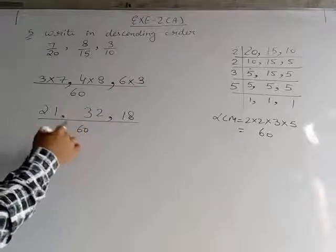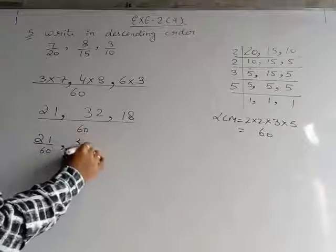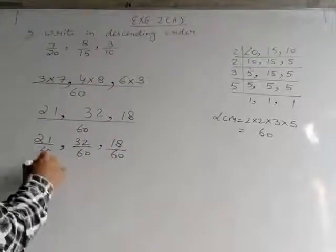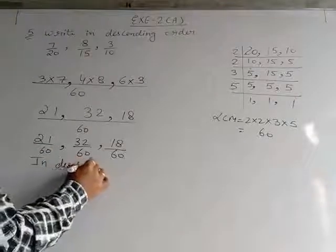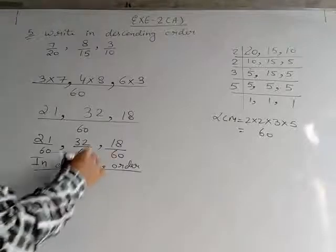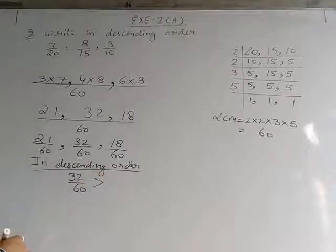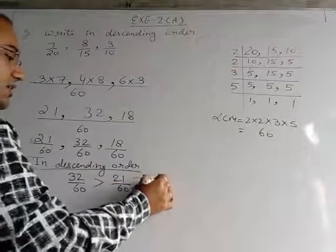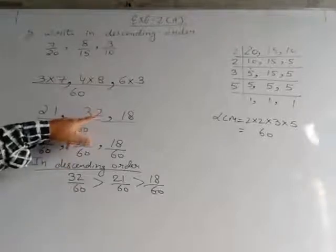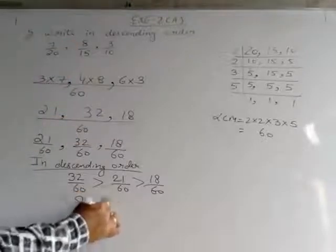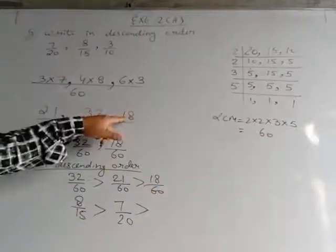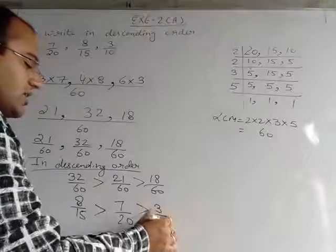Now we write each fraction separately with denominator 60: 21/60, 32/60, and 18/60. In descending order, we write the greater number first. 32/60 is the greatest, so we write it first. After that 21/60, then 18/60. Now under these we write the original values from the question: 32 corresponds to the second fraction 8/15, 21 corresponds to the first fraction 7/20, and 18 corresponds to the third fraction 3/10. So this is the final answer of question number 5.